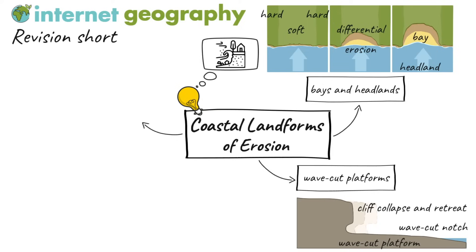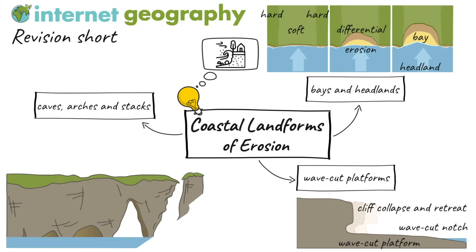A headland is an area of hard rock that sticks out into the sea. When headlands erode, they create distinct features such as caves, arches, stacks and stumps. The first stage in the erosion of a headland involves the widening of joints and bedding planes, enlargening cracks by erosional processes such as hydraulic action and abrasion, and weathering processes such as salt crystallisation.